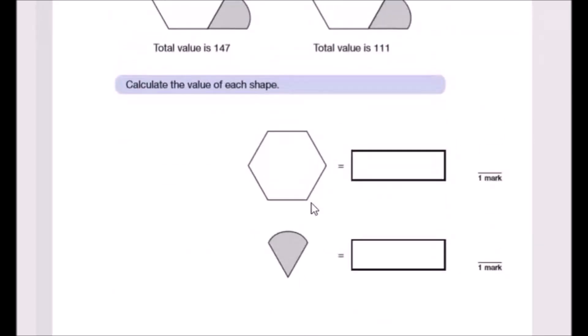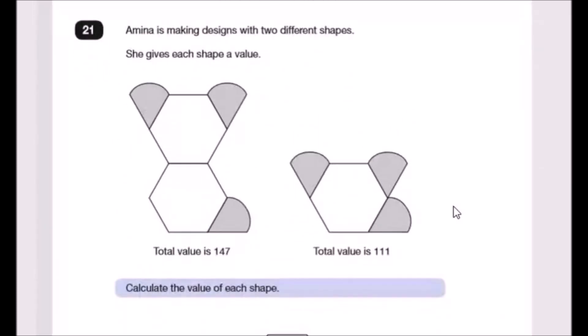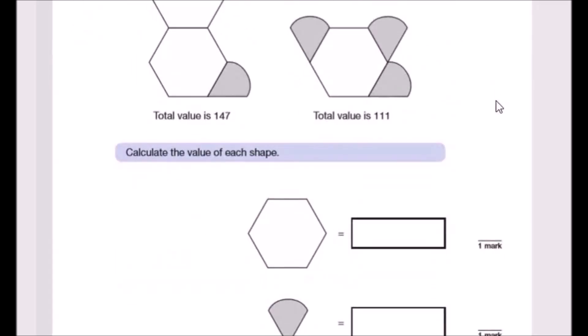They want to find the value of both shapes. The trick is to realize what is missing on both sides. This first shape has everything the second shape has plus a hexagon. So we can say that 111 plus the extra hexagon gives us 147. To find this shape, we can just subtract 111. Subtracting 111, we're left with a hexagon value of 36. So 111 plus 36 gives us 147.